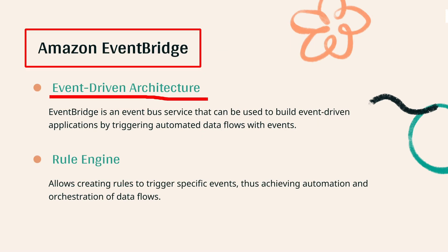Amazon EventBridge triggers automated data flows through events. It creates rules to trigger events, enabling data flow automation.